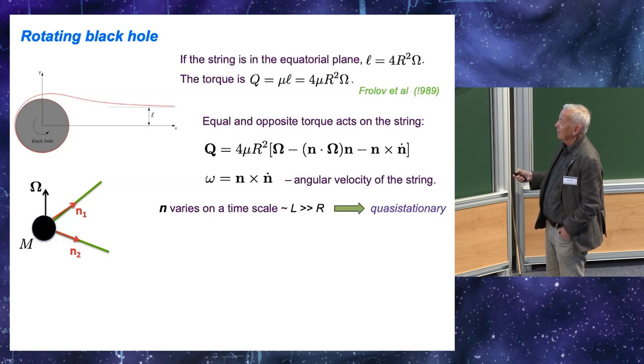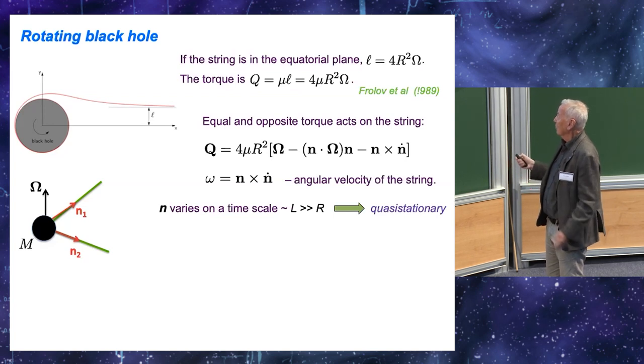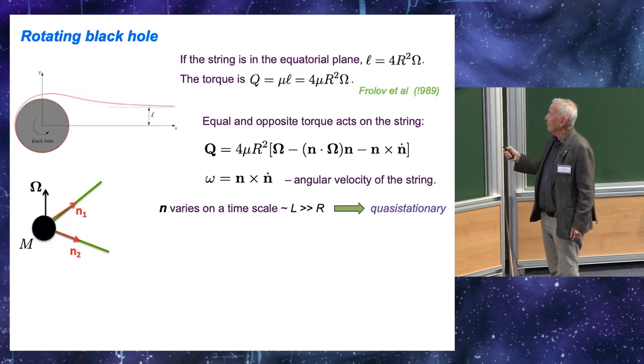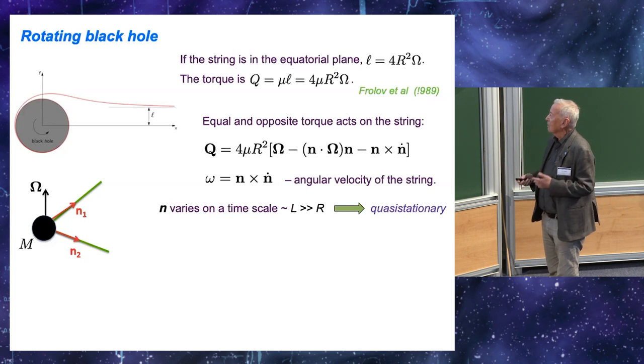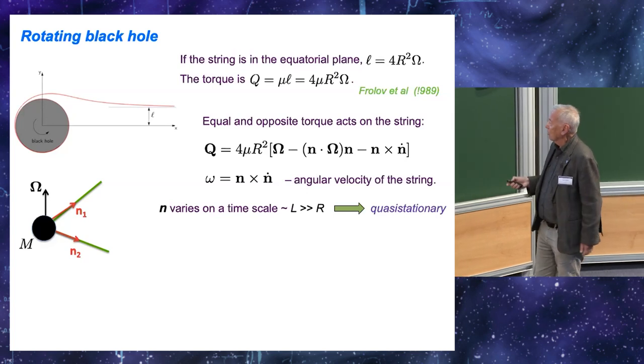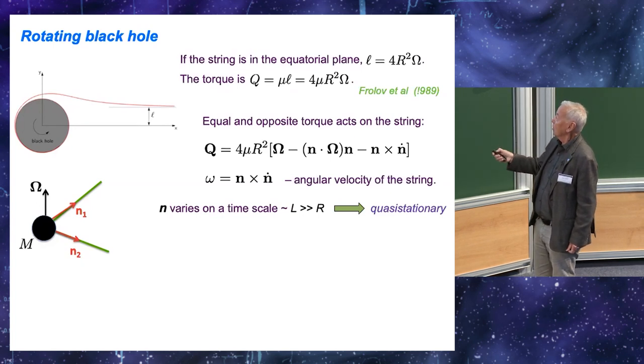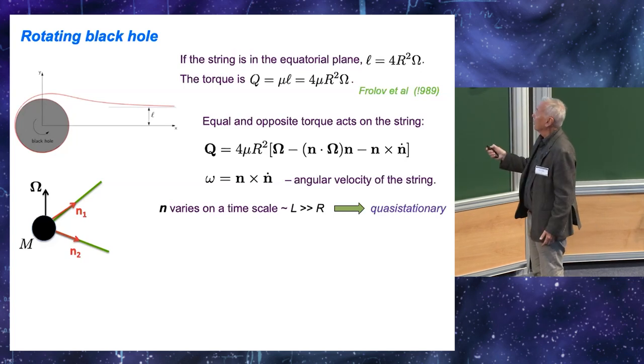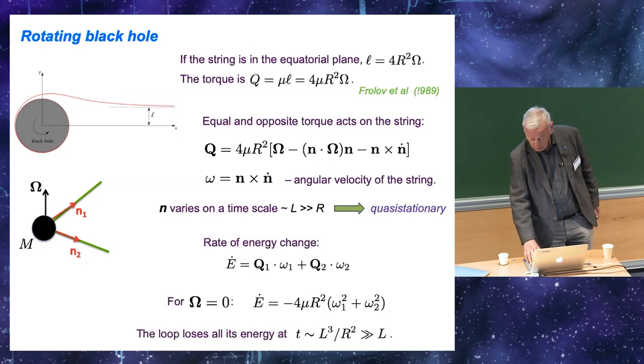So, these vectors N1 and N2 vary on this time scale of the loop oscillation, which is of order L, the length of the loop. And, this is much greater than the characteristic time scale associated with the black hole. So, in this sense, these directions are, this situation is quasi-stationary. So, from which we conclude that we can use this expression, which was obtained for a stationary solution. But, we still assume that it applies locally at any moment of time. We can use this formula.